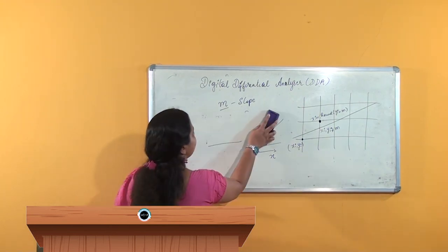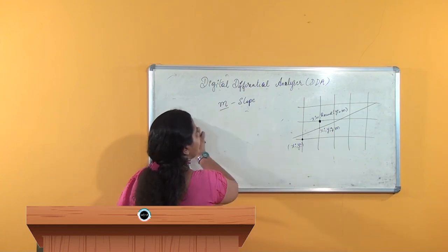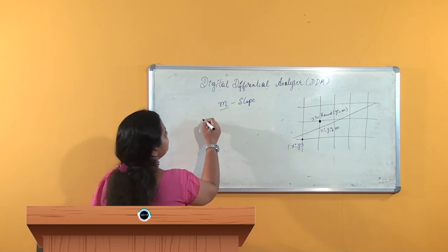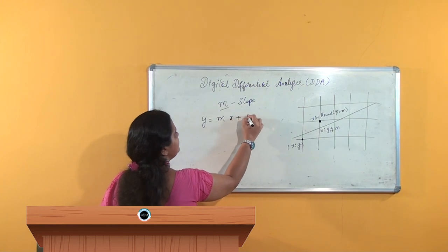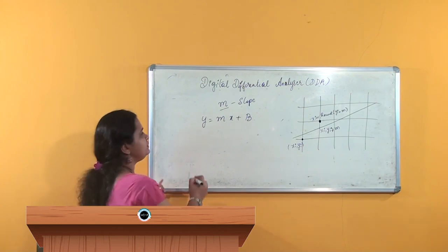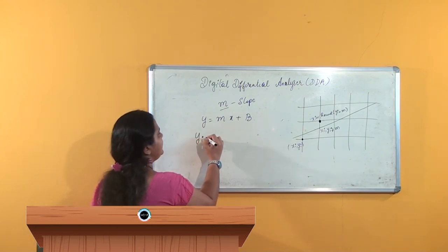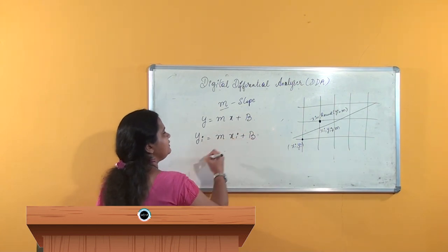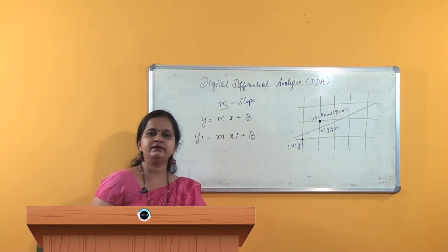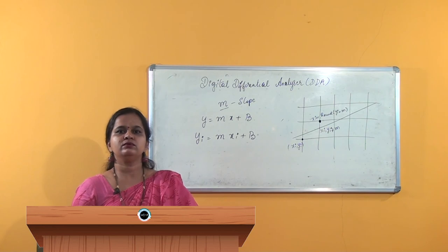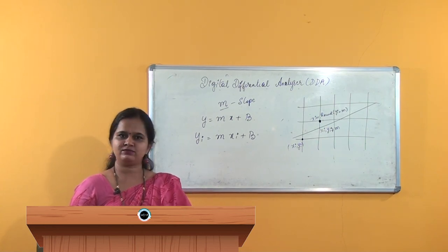Now we will start with the derivation of the algorithm. The equation y = mx + b is given. The next point we want will be y_i, which is equal to m·x_i + b. Like this, the derivation starts on. We will see the continuation of this in the next part.